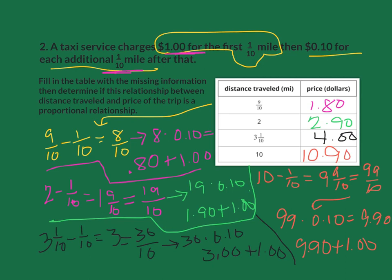Hopefully you notice that every time we did this, we had to subtract and then we multiplied. The fact that we had to do more than one step, more than just multiplying from the distance traveled to the price, that's enough for us to know that this is not proportional.